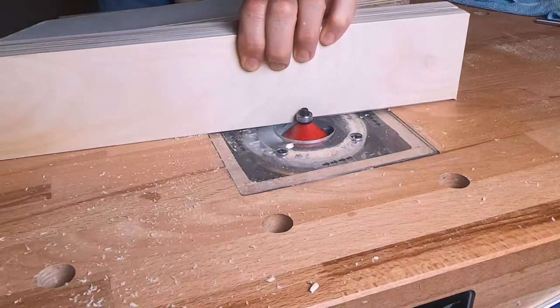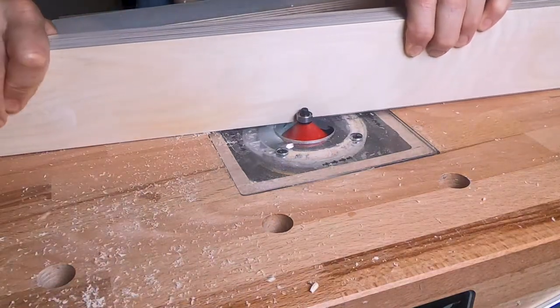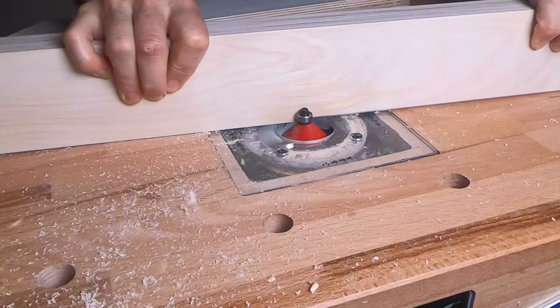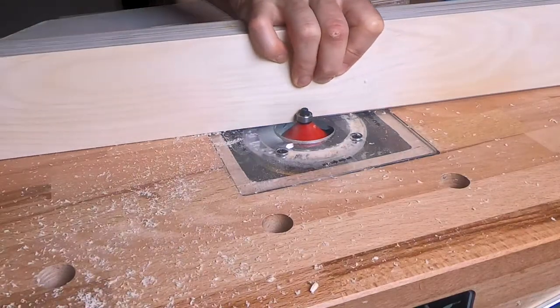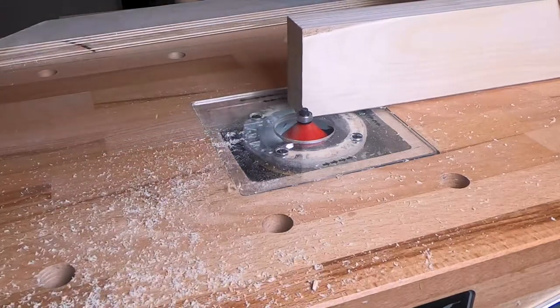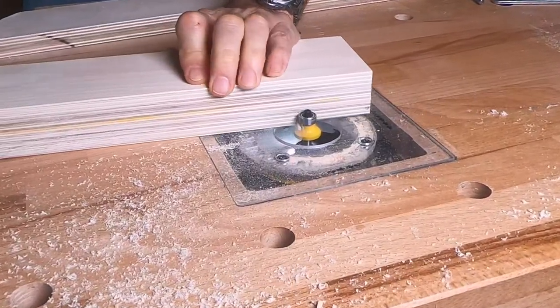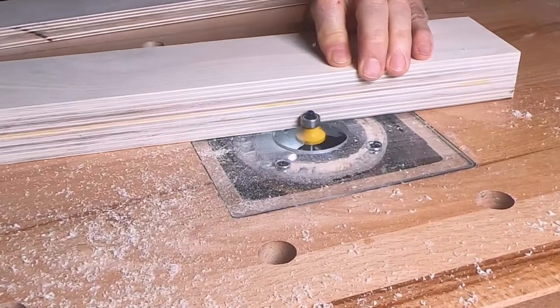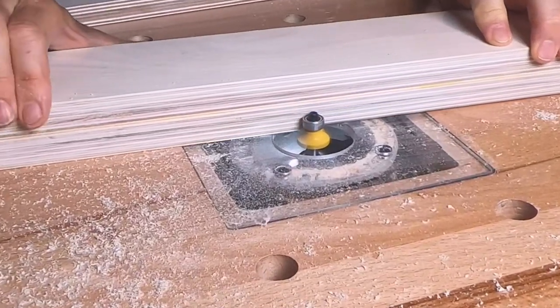First I'll use a 45 degree chamfer bit to relieve a bit of the area underneath at the bottom of the fence so that a little bit of dust doesn't get in the way of my workpiece, and then I'll round off the top just to make it more comfortable for my fingers.